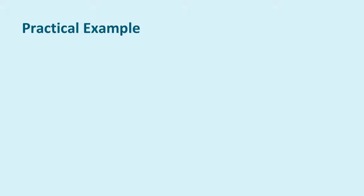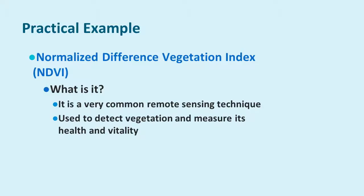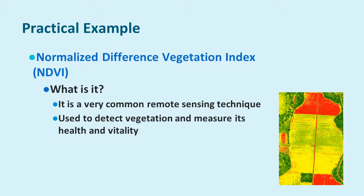Let's examine a practical example of band ratios. One of the most common is the Normalized Difference Vegetation Index, or NDVI. It's a very common remote sensing technique used to detect vegetation and measure its health and vitality. Here we have an example of what it looks like in practice — an image already processed for NDVI showing farmland. We can clearly see the boundary between the farmland and neighboring stands of trees, infer that red areas are fields currently not planted, and see green where planting is beginning.